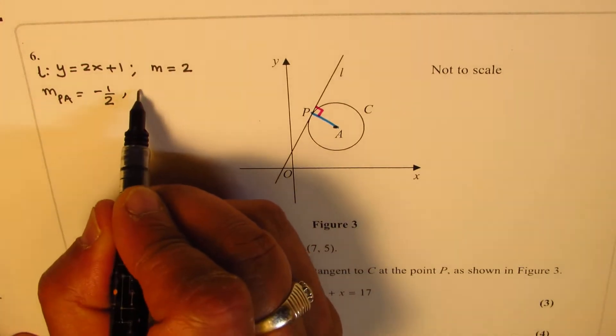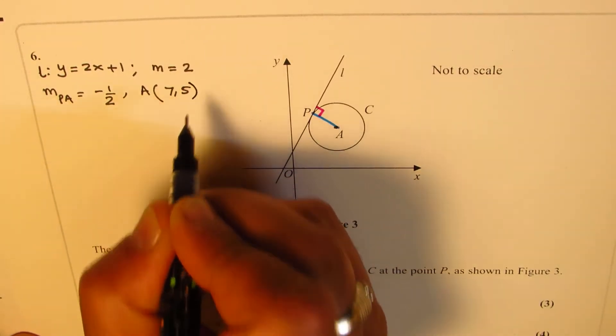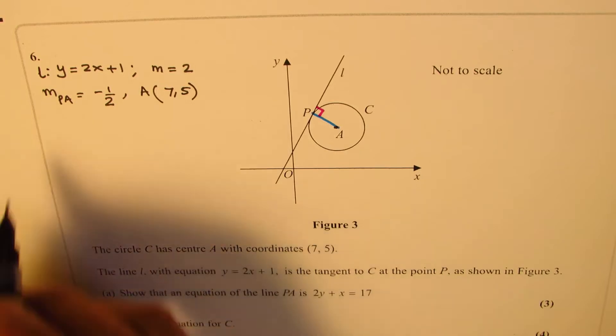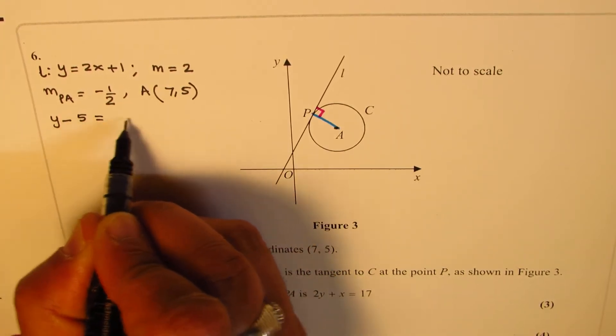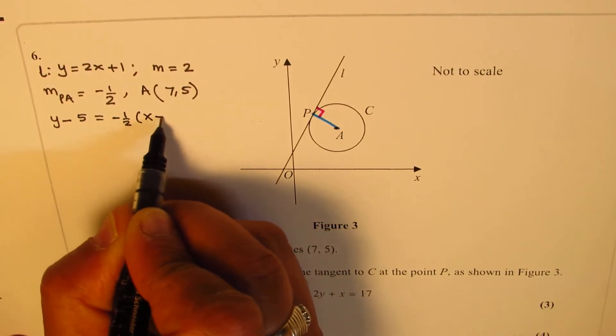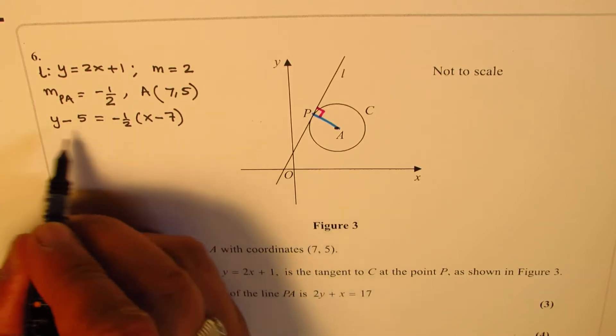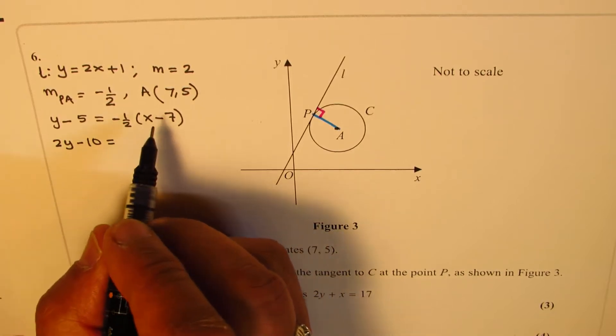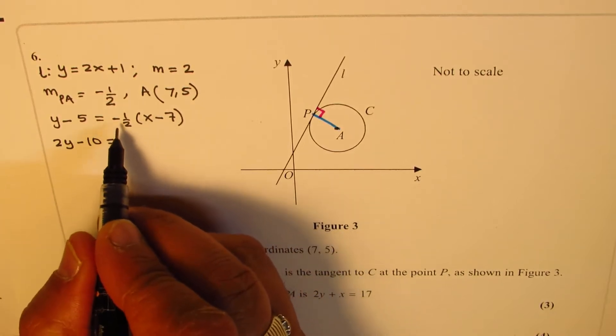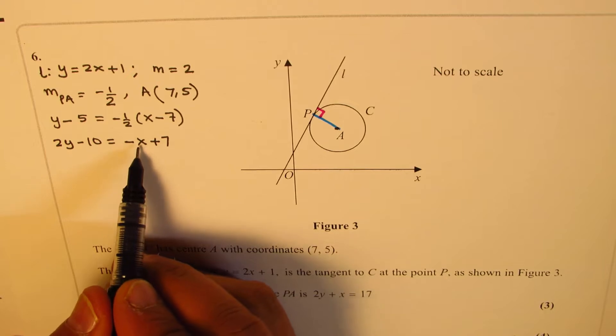We are given that the equation of line L is y = 2x + 1, so the slope m is 2. The slope of PA should be negative 1 over 2, since it is perpendicular. And it is passing through point A, whose coordinates are (7, 5). Now that gives you the equation of line: y - y₁ = slope × (x - x₁).